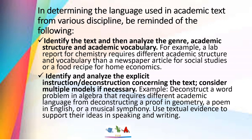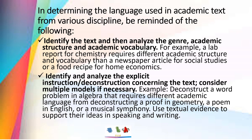To determine the language of an academic text from various disciplines, we should be reminded of the following. First, identify the text and then analyze the genre, academic structure, and academic vocabulary. For example, a lab report for chemistry requires different academic structure and vocabulary than a newspaper article for social studies or a food recipe for home economics.